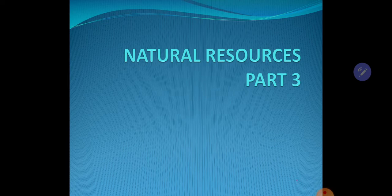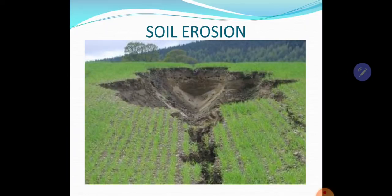We have soil erosion. Soil erosion means the transportation of land particles from one place to another with the help of moving air — that is wind — and flowing water. You can see over here, because of the flowing water, it can be because of the rain, heavy rain, or erosion by the river. We can see how the upper part of the land, the soil, is eroded or transported from one place to another.